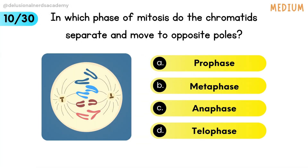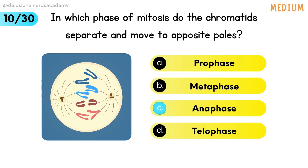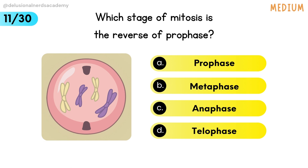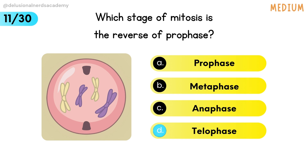In which phase of mitosis do the chromatids separate and move to opposite poles? Anaphase is the correct option. Which stage of mitosis is the reverse of prophase? Telophase is the reverse of prophase.